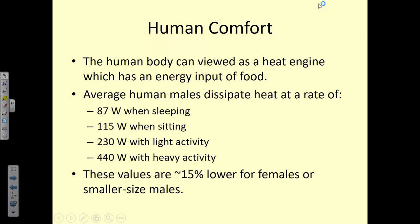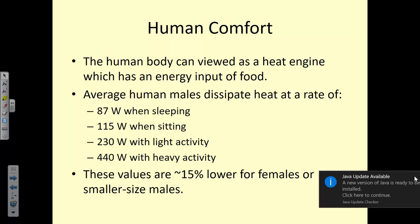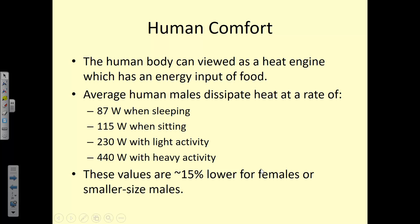When we talk about air conditioning, it necessitates a discussion of human comfort. If we think about our bodies, we intake food, water, we excrete, but we also have waste heat. So we can look at ourselves pretty much like a heat engine, where we're consuming and depositing heat to a heat sink. The average human male dissipates heat at 87 watts when sleeping, 115 when sitting in class, 230 with light activity like golf or bowling, and 440 with heavy activity like running or lifting weights.